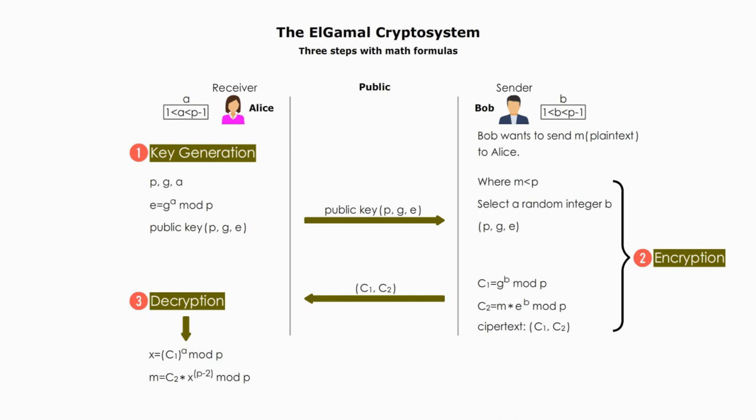Here is the diagram of the three-step process with math formulas. Public key algorithms such as Elgamal and RSA always start with the message receiver, who is responsible for generating the public key. The message sender uses the public key for encryption. During the process, the public key and ciphertext are transmitted over a public channel like the internet, while private keys are known only to their owners and always kept secret.